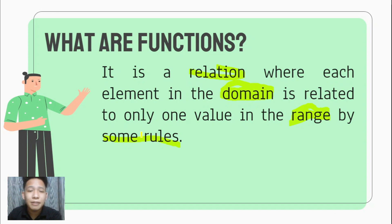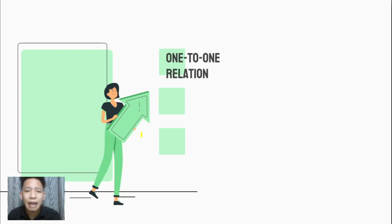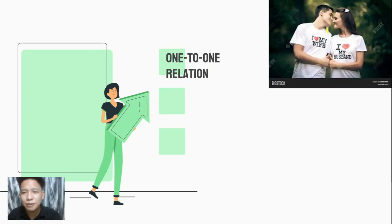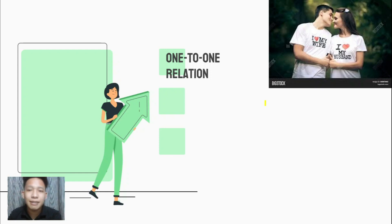In a function, we have restrictions. There are kinds of relations. We have one-to-one, wherein its best example is illustrated here — a husband and a wife. In real life, there should only be one wife and one husband, so that illustrates a one-to-one relation.